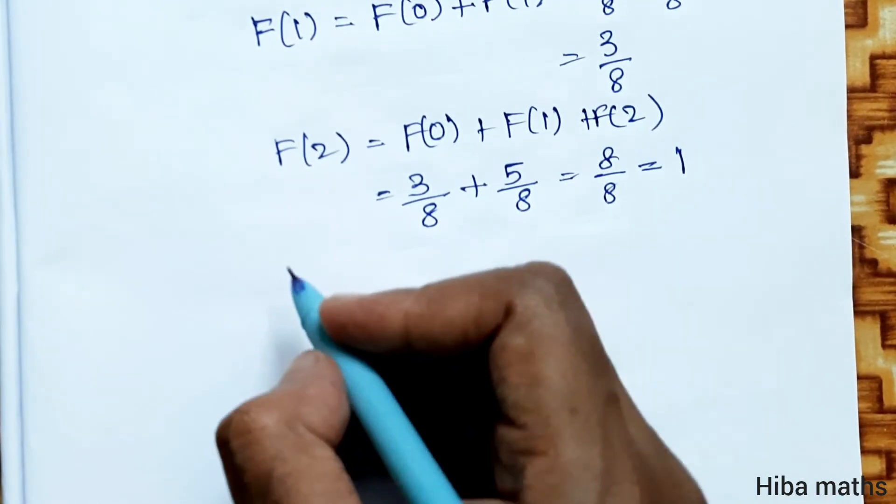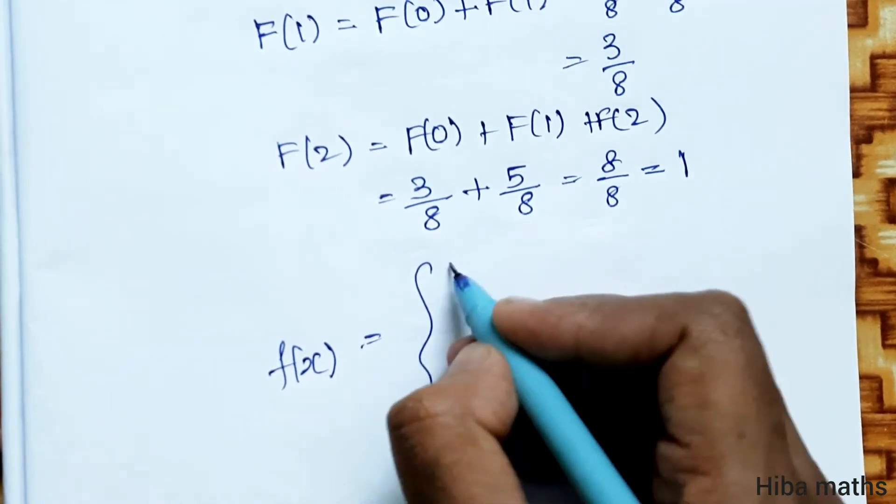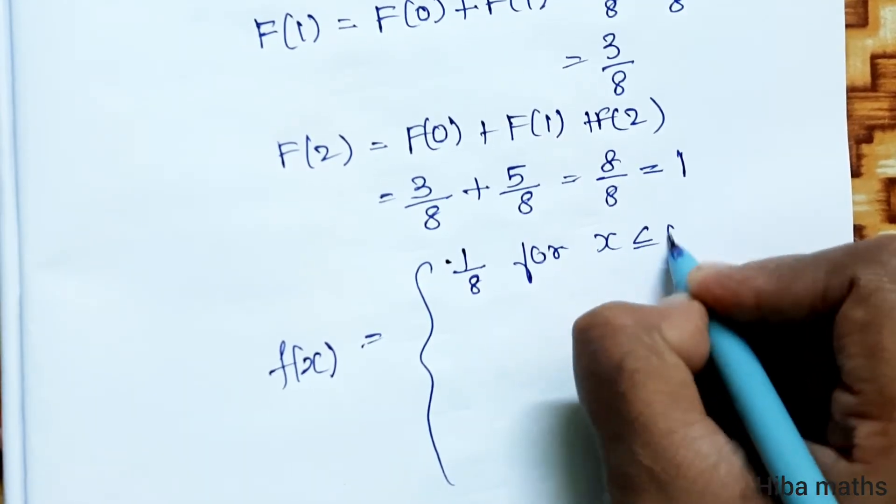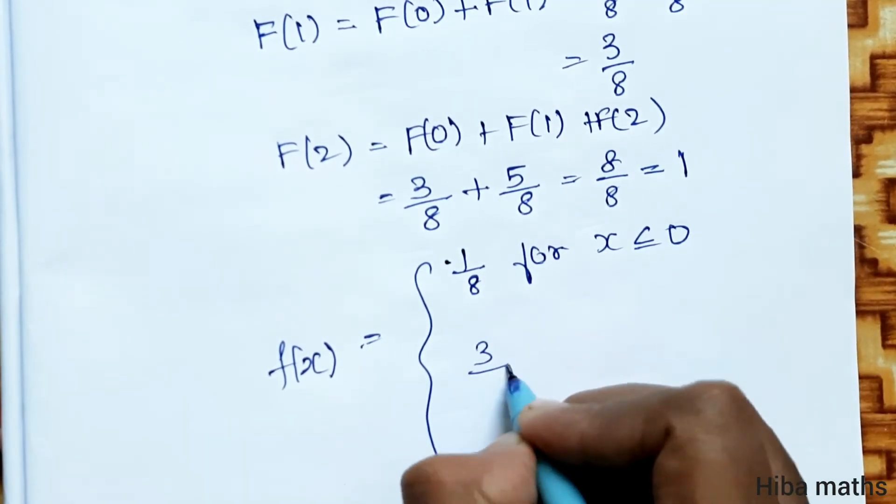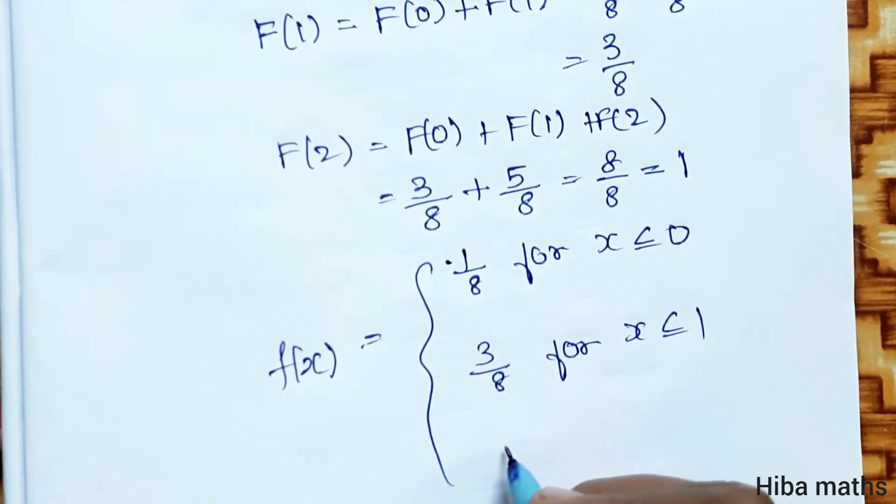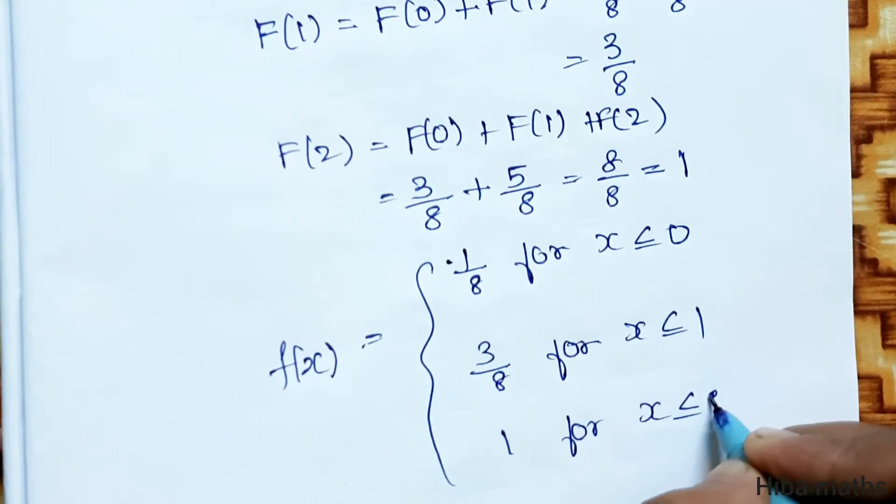So the cumulative distribution function F(x) equals: 1/8 for x ≤ 0, 3/8 for x ≤ 1, and 1 for x ≤ 2.